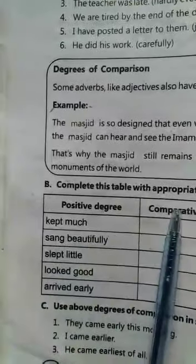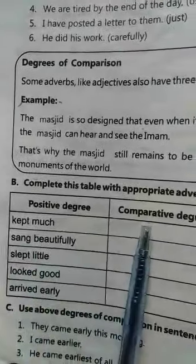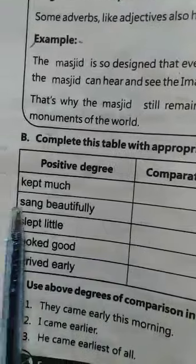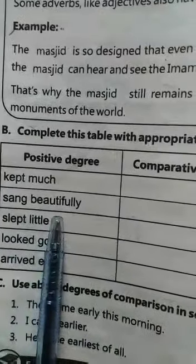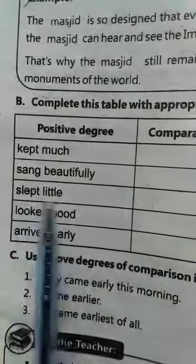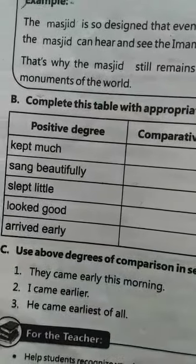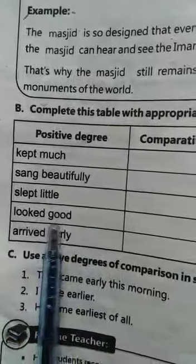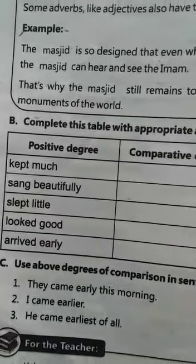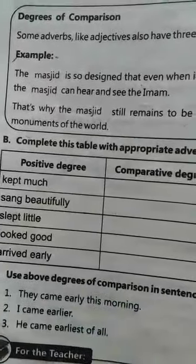Positive degree, comparative degree, superlative degree: kept much — kept more — kept most; sang beautifully — more beautifully — most beautifully; slept little — slept less — slept least; looked good — looked better — looked best; arrived early — arrived earlier — arrived earliest.